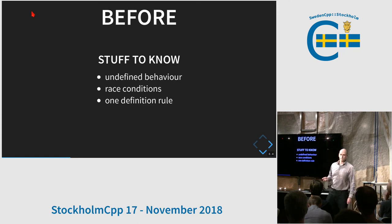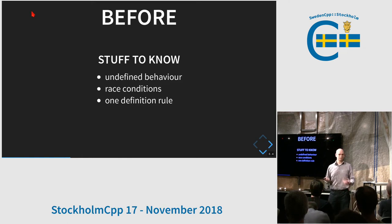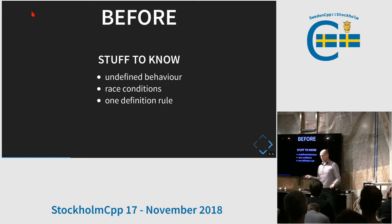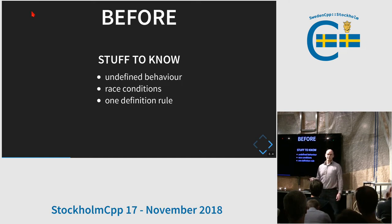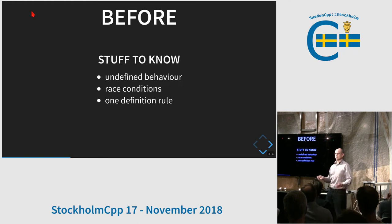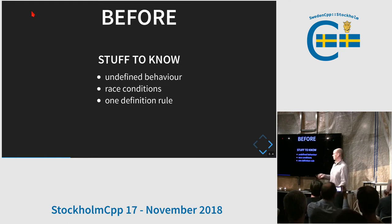There's a lot of stuff you need to know, and even if you don't know it in detail, you must have heard of it so you know that there's something you don't know. Undefined behavior and race conditions — race conditions are a special case of undefined behavior. If you don't know what undefined behavior is or why it's bad, you need to learn. If you ever had a bug in release builds but not in debug builds, it might be because you have undefined behavior — the optimizer has taken advantage of it and modified your code, which is valid according to the standard. The one definition rule is also good to know.